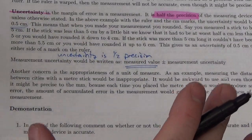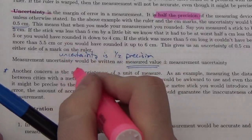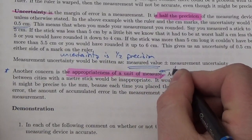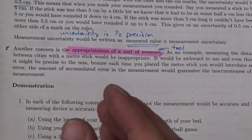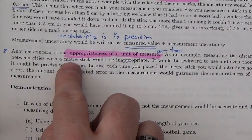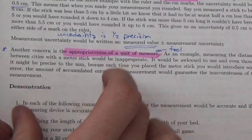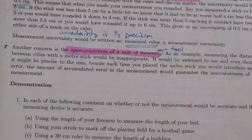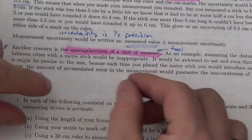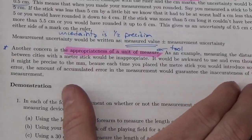Before we end this, one other issue we bump into when measuring things is the appropriateness of the unit of measure or even the tool. You can run into big problems with accuracy if you're using the wrong tool. For example, if you're going to measure the distance between two cities, measuring that with a meter stick is inappropriate. You'd have to flip it over and over all the way from one city to the next, and every time you do that, you introduce a little error. That error gets bigger and bigger each time. So you need to make sure you're using the correct tool for the correct job.